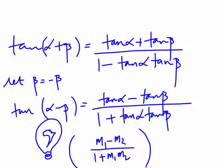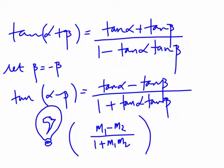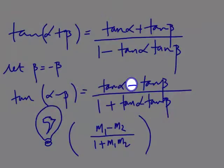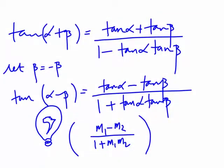For tan(α − β), we replace β with −β. Since tan(−β) = −tan β, the signs change and we get: tan(α − β) = (tan α − tan β) / (1 + tan α tan β). This is also the angle between two lines formula — since tan equals gradient, the angle between lines with gradients m₁ and m₂ is |m₁ − m₂| / (1 + m₁m₂), taking the absolute value for the acute angle.